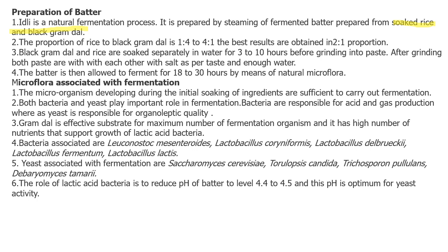After soaking, the bacteria get water and all the favorable conditions they need, so they start growing. Naturally, some bacteria are present on the surface of rice and black gram dal, and once we wash and soak them, they begin to grow. The proportion of rice to black gram is usually 1:4 to 4:1, and the best results are obtained at a 2:1 proportion.